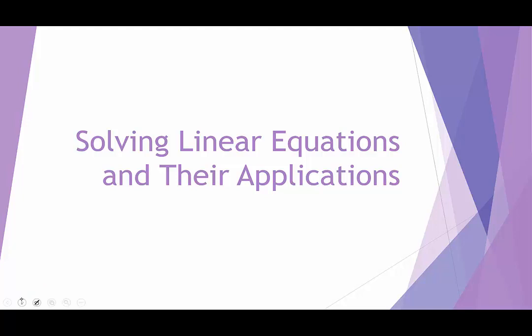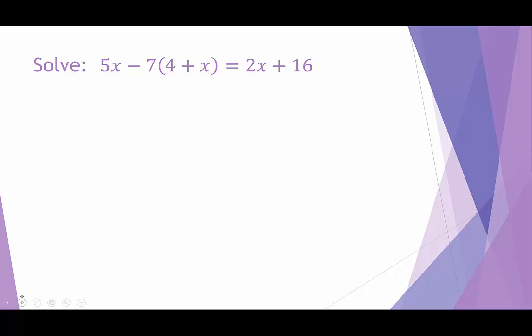In our first example, we want to solve 5x minus 7 times in parentheses 4 plus x equals 2x plus 16. First we want to clean up the left-hand side as much as possible, so I'm going to distribute the negative 7, giving us 5x minus 28 minus 7x equals 2x plus 16.